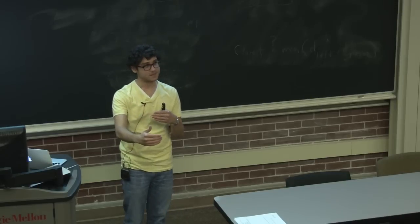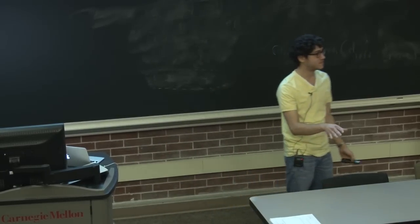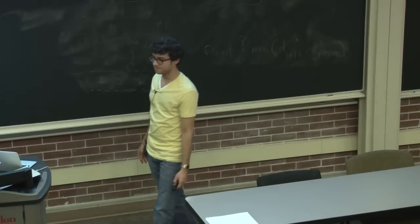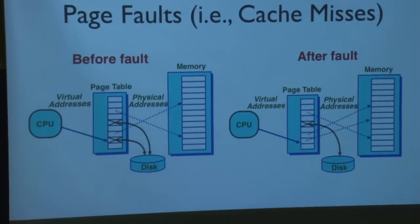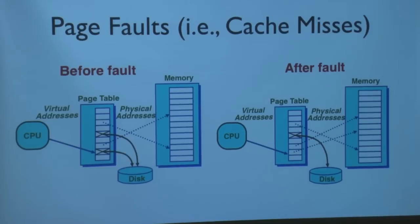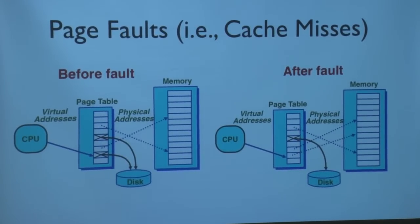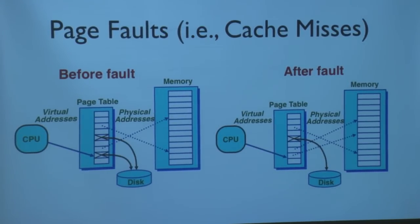When a page fault occurs, the current process stops executing; others might continue in the background whose data is in memory. The OS has full control over the placement of this data — it can remove certain data from memory to make room for the new page. On this diagram, before the page fault: the CPU tries to access an address marked as not present in memory but present on disk. The OS requests the data from disk, maps it into memory, updates the page table, and then the process resumes and can access its data from memory.